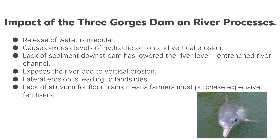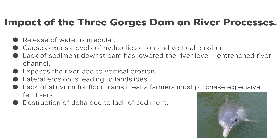Thinking about the farmers again: the lack of alluvium for floodplains means farmers must purchase expensive fertilizers. There's also destruction of the delta due to lack of sediment. A delta is a feature of river deposition that forms at the end when the river flows into the sea and deposits its material. In China, this has led to the wipeout of the white river dolphin, which no longer exists in China because of the dam.